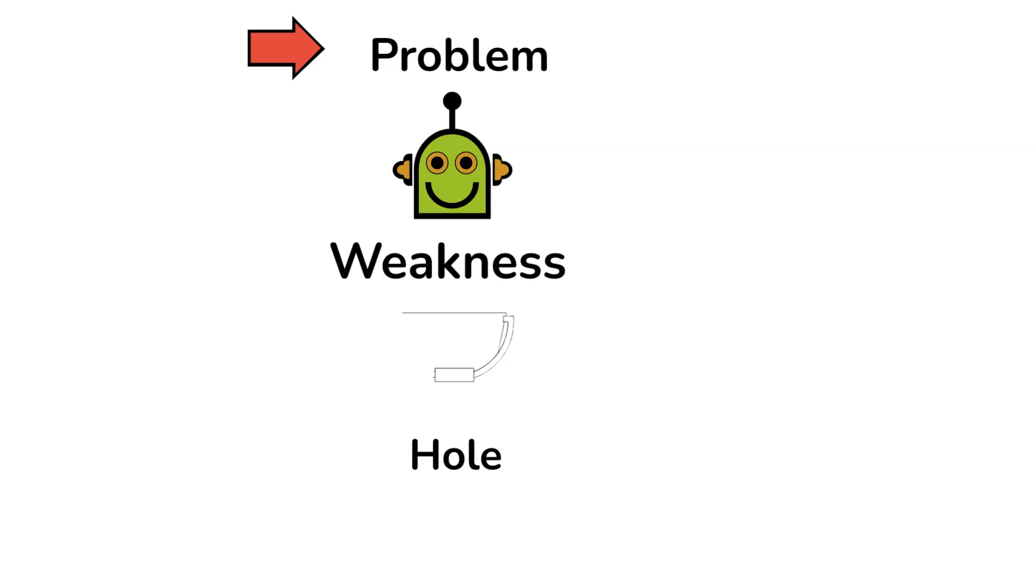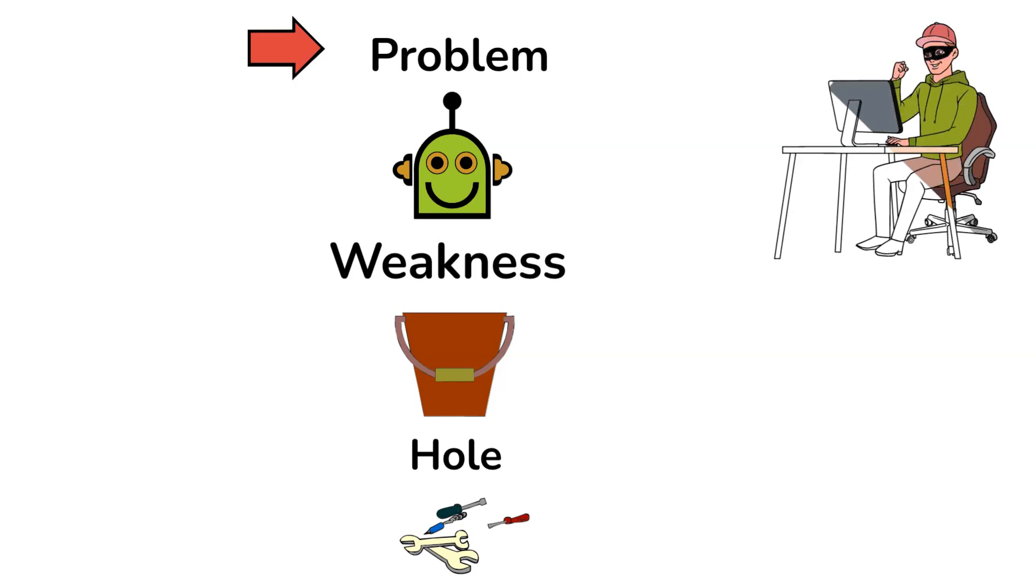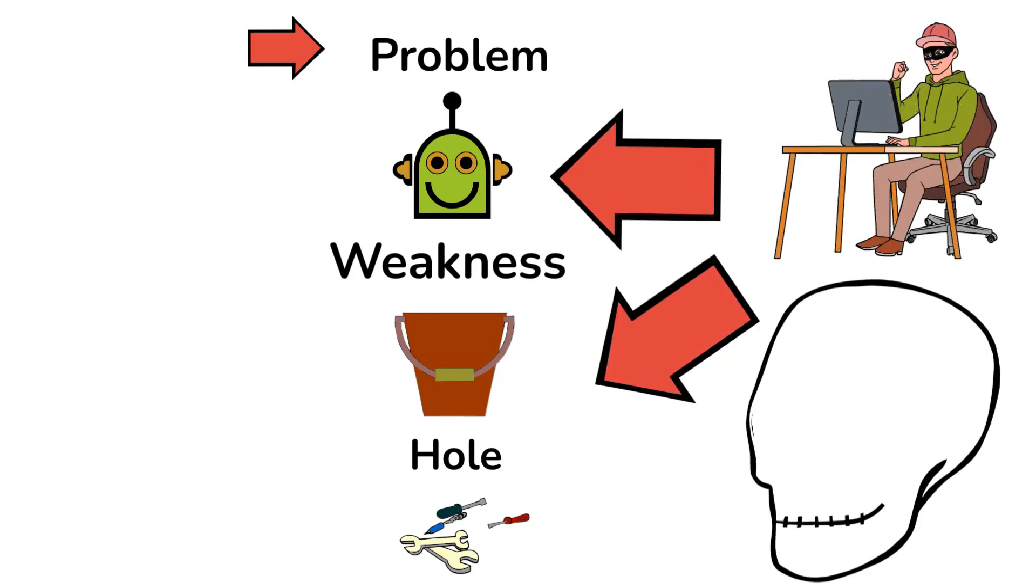But there was a problem with this robot bash. It had a weakness. More like a hole in his bucket. You know, one of the tools it came with? Bad guys found out they could sneak in through this hole and tell this robot to do things the owner of the house did not want.